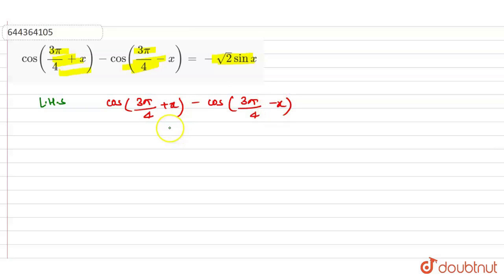So here we know the identity cos(a + b) is equal to cos a cos b minus sin a sin b.